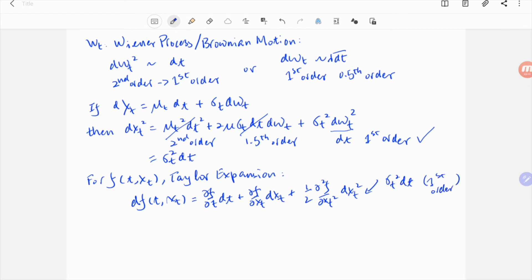Plugging in dxt, which is just the original SDE, and dxt squared, which is sigma squared dt, as we did earlier, and then reorganize the terms into dt and dwt. We have arrived at the so-called Ito's lemma.